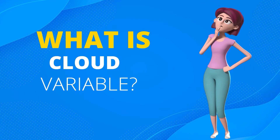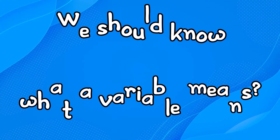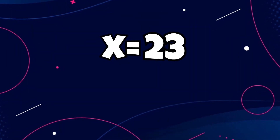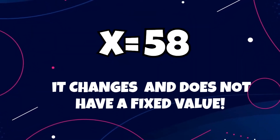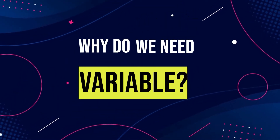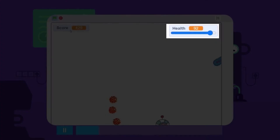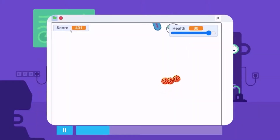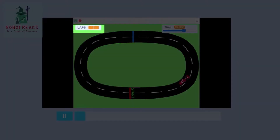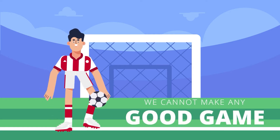Before we understand what a cloud variable is, we should know what a variable means. It is something that can be changed or does not have a fixed value. But why do we need a variable? Variables are used for all sorts of things — from storing the score of a player to the number of lives a player has, from storing the time left to the number of laps a car has completed. Without a variable, we cannot imagine making any good game.